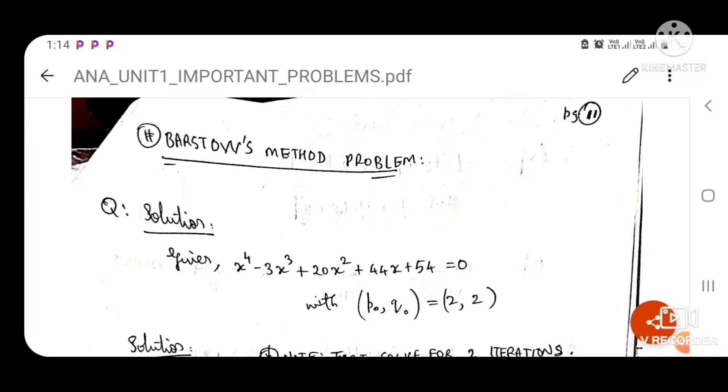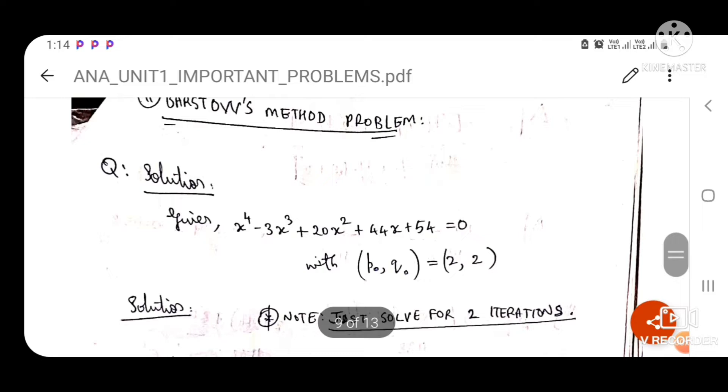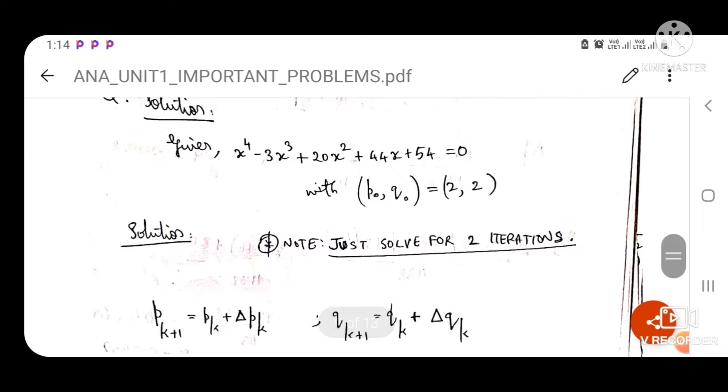We're going to talk about the Bairstow's method problem. We have a polynomial which has the highest power of four, and P naught and Q naught are basically two initial points which are just given.